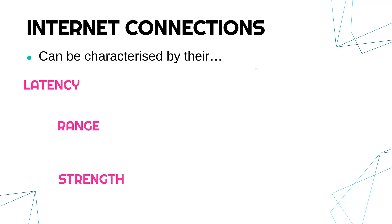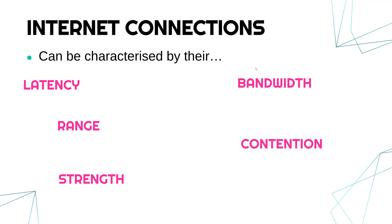Things like latency, range, strength, bandwidth, and contention are keywords which relate to the performance of a network and relate to the performance of a network connection to the internet. Let's go through these one by one — this is not a complete list, there are other words you could use, but these are the five I think you need to know.